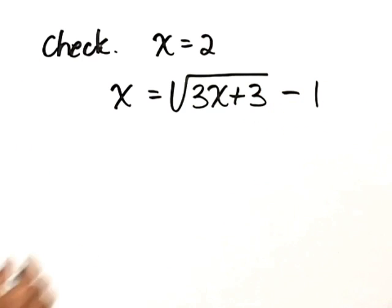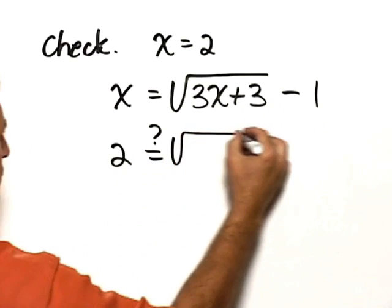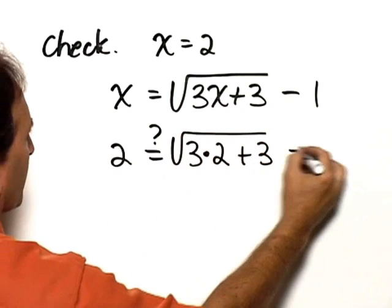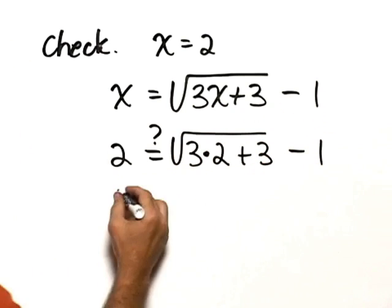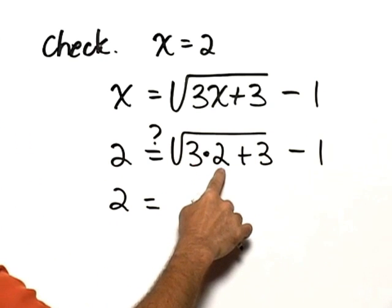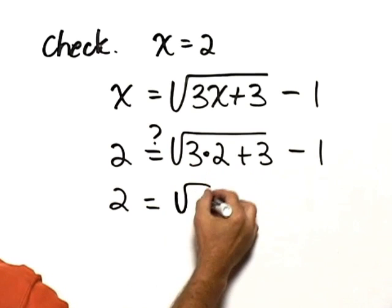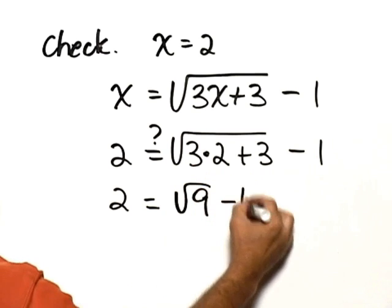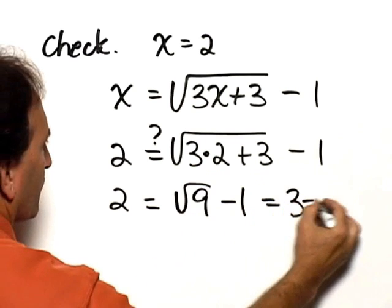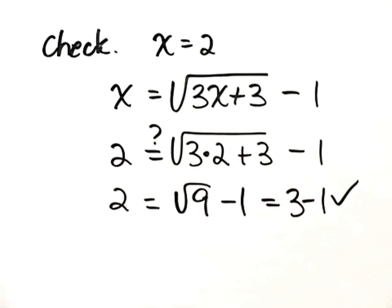So we would have 2 equals the square root of 3 times 2 plus 3 minus 1. So that's 2 equals, 3 times 2 is 6, 6 plus 3 is 9. So that's the square root of 9 minus 1. The square root of 9 is 3. This is 3 minus 1, and 3 minus 1 definitely equals 2.